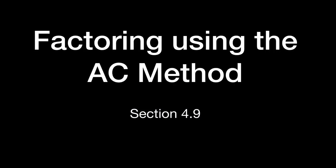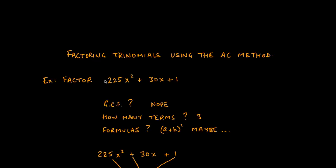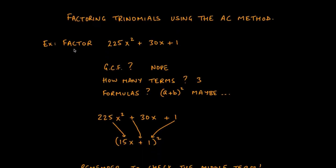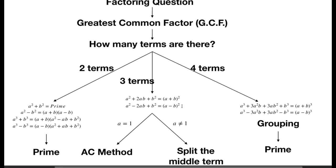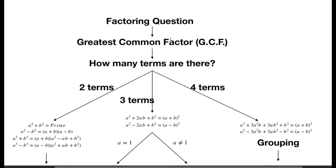Hey guys, welcome to Section 4.9. In this section we'll talk about how to factor trinomials using the AC method. Let's get started. Let's look at an example to start off: we're being asked to factor 225x² + 30x + 1, and we bring back our friendly chart — the decision tree we have to make.